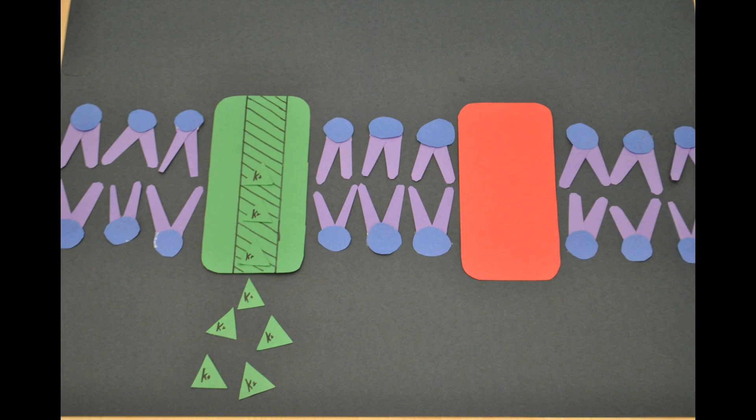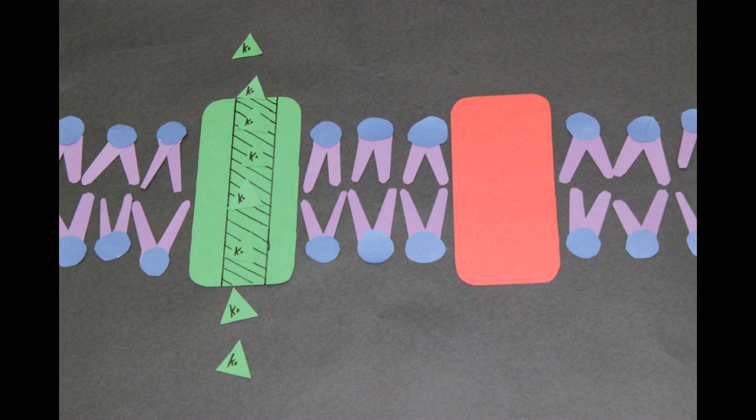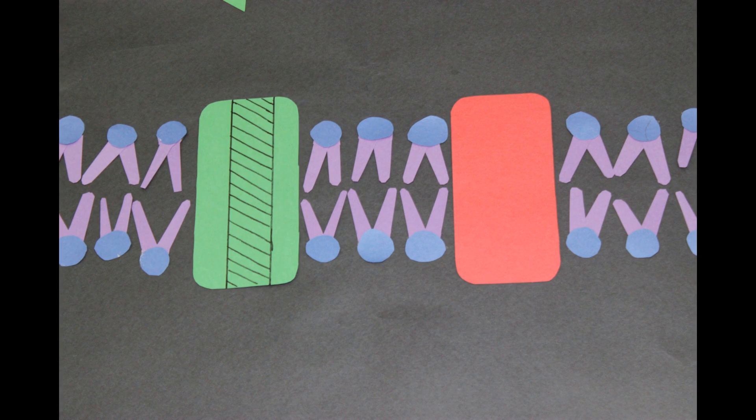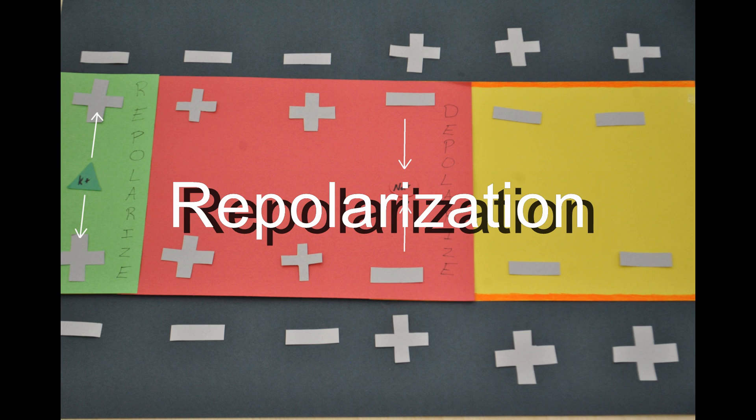Potassium ions begin to rapidly flow out of the cell, so the inside of the cell has a net negative charge again and the outside has a net positive charge again. This is called repolarization.